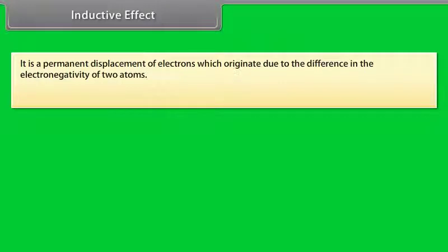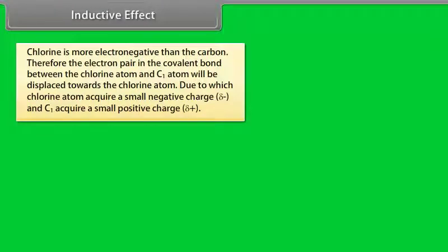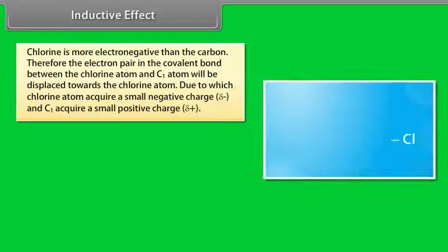Inductive effect — it is a permanent displacement of electrons which originates due to the difference in the electronegativity of two atoms. Consider a chain of carbon atoms in which the terminal carbon atom is joined to a chlorine atom. Chlorine is more electronegative than carbon; therefore, the electron pair in the covalent bond between the chlorine atom and C1 will be displaced towards chlorine, causing chlorine to acquire a small negative charge and C1 to acquire a small positive charge.